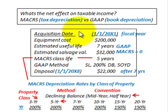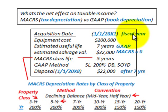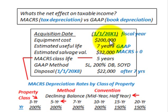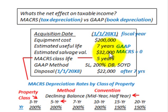We'll be going through a simple example. We have an acquisition date on a piece of equipment of 1-1-20X1, and our fiscal year for the company runs from January 1st through December 31st, so we don't have any partial period allocation for depreciation. We have an equipment cost of $200,000, an estimated useful life of 7 years for GAAP, and an estimated salvage value of $32,000.